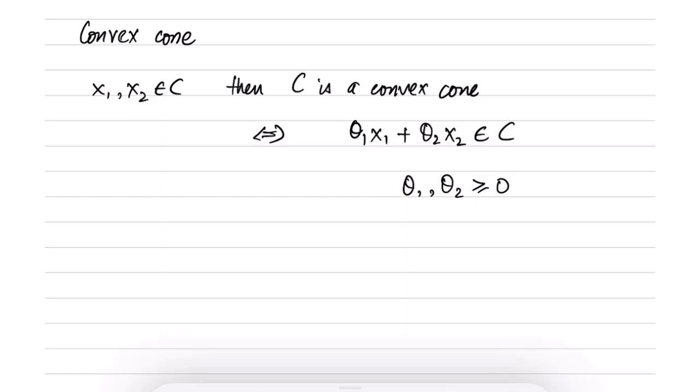But in this case, we have no restriction on what θ1 plus θ2 can be. This can be arbitrary, but we do require θ1 and θ2 to be non-negative.